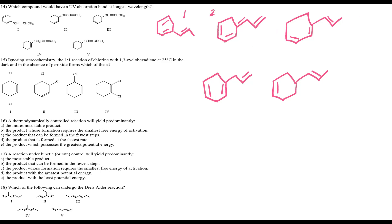Question 14: which compound has a UV absorption at the longest wavelength? As conjugation increases, wavelength (lambda) also increases. Higher wavelength means closer to visible color — approaching red/infrared. Without any conjugation, you can't even see color and need UV light. I redrew the structures. Structure 1 has one conjugated system. Structure 2 has three. Structure 3 has two. Structures 4 and 5 have zero. More conjugated systems means longer wavelength, so structure 2 (answer B) is correct.